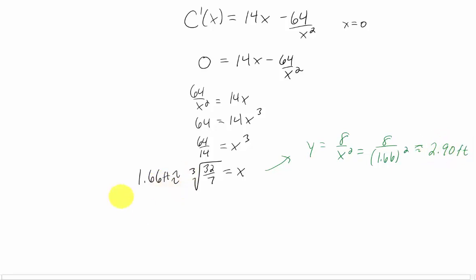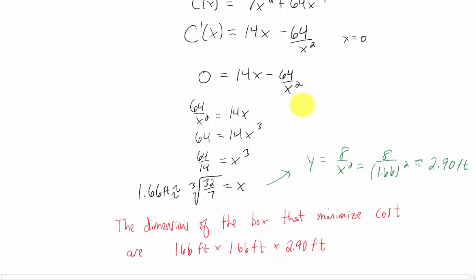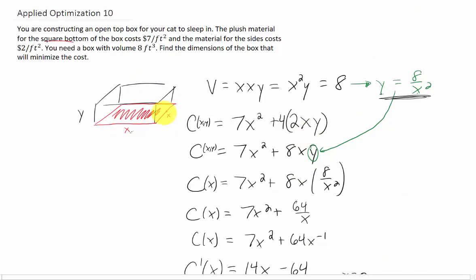So we can summarize what we found. The dimensions of the box that minimize our cost are 1.66 feet by 1.66 feet by 2.90 feet. That is the X dimension by the other X dimension by the Y dimension.